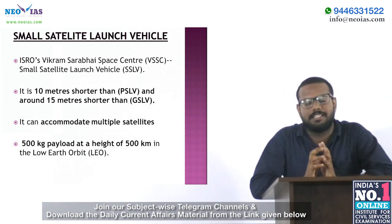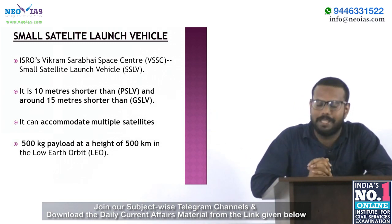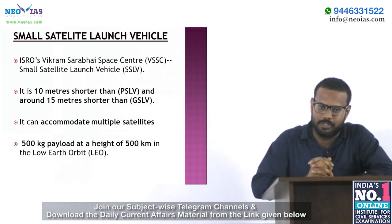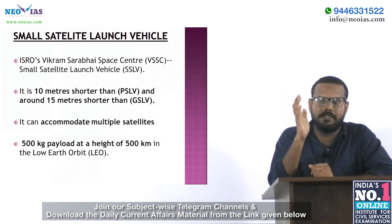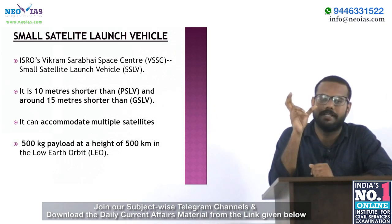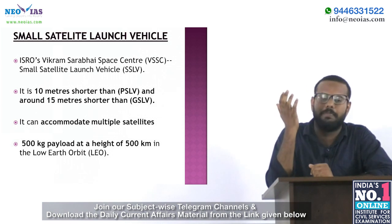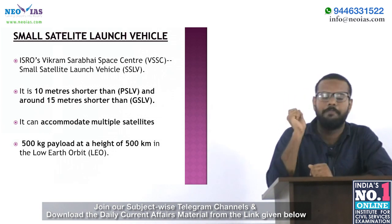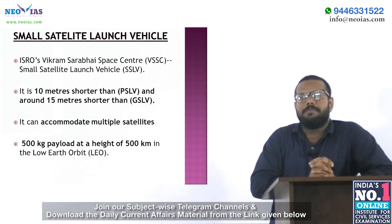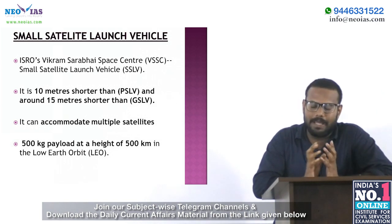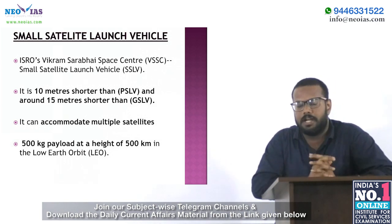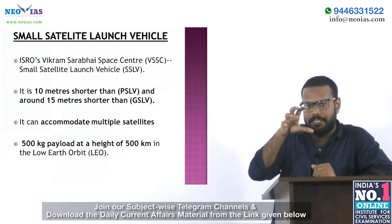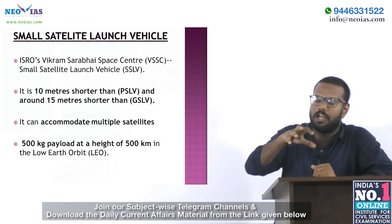Compared to PSLV and GSLV, the SSLV is smaller in size — 10 meters shorter than PSLV and 15 meters shorter than GSLV. Despite its smaller size, the SSLV can place a 500 kg payload at a distance of 500 kilometers in low Earth orbit. So it is a game of 500 and 500 — 500 kg payload at 500 km distance.